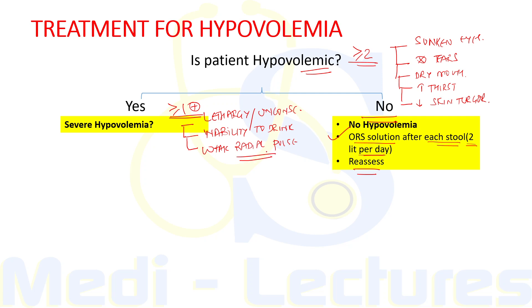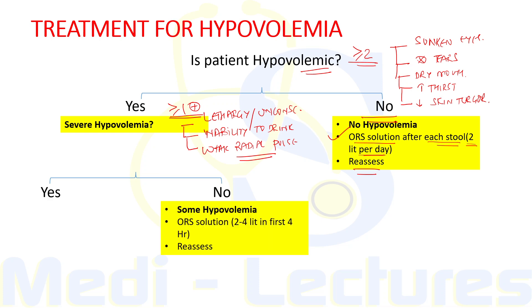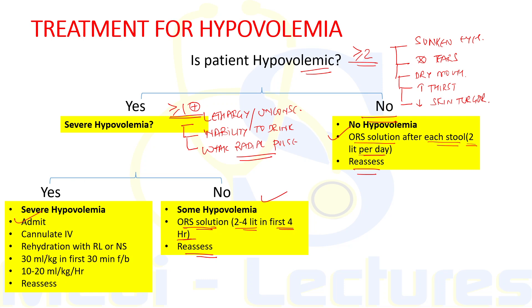If there is no severe hypovolemia, it is labelled as some hypovolemia and we give ORS solution orally — two to four liters in the first four hours — and reassess regularly within six hours. If severe hypovolemia is present, this is an indication for admission. We cannulate the patient and IV rehydrate with Ringer's lactate or normal saline — Ringer's lactate is preferred if there is no vomiting. Give 30 ml/kg in the first 30 minutes, followed by 10 to 20 ml/kg/hour, reassessing until vitals are maintained.